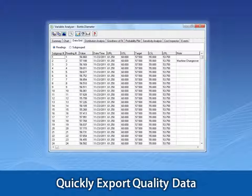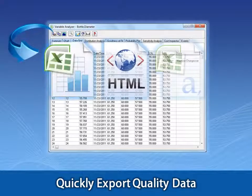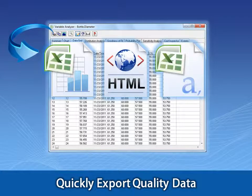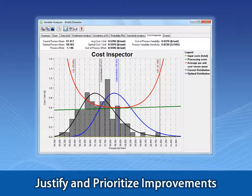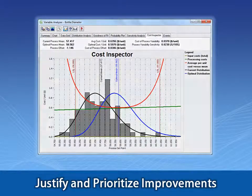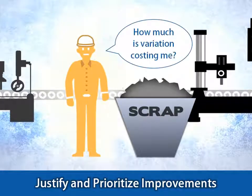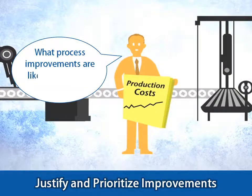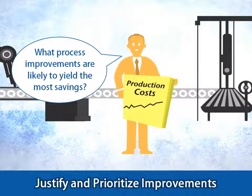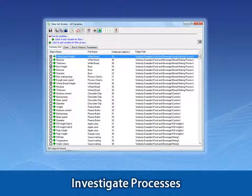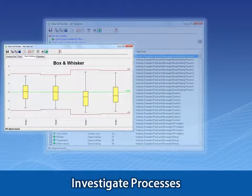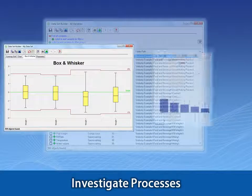You can use a data grid to get a clean view of raw data and quickly export that data to Excel and other tools. You can calculate production costs using WinSPC's Patent Pending Cost Analysis tool and get answers to questions like: How much is variation costing me? And what process improvements are likely to yield the most savings? You can also use WinSPC's robust querying tool to investigate and illuminate process changes that may be going unnoticed.